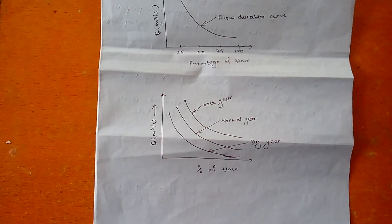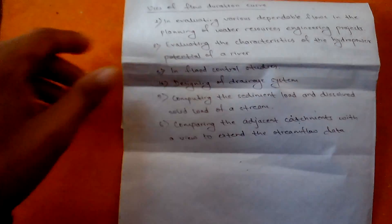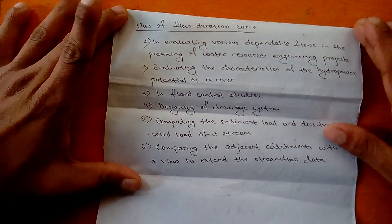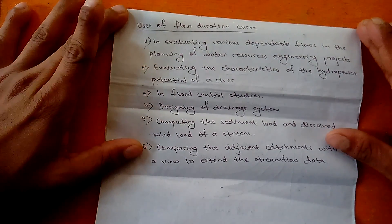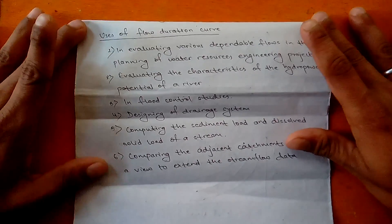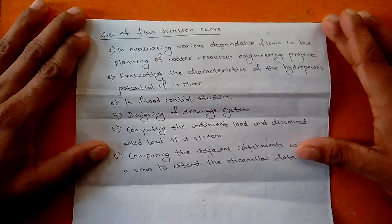Now let's jump into the uses of flow duration curve. Flow duration curves have significant uses in hydropower design. The first use is in evaluating various dependable flows in the planning of water resources engineering projects. You can watch my other video on flow duration curve to see how to calculate it and what kinds of dependable flows are involved.